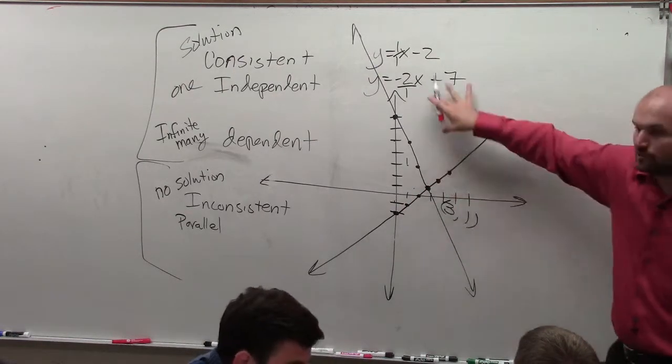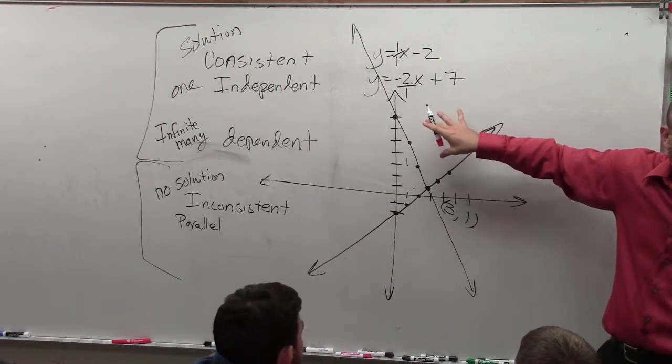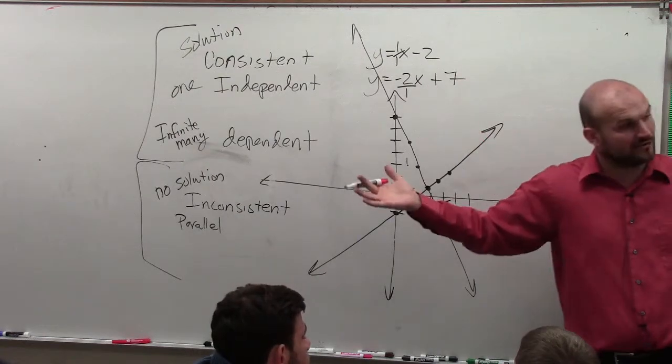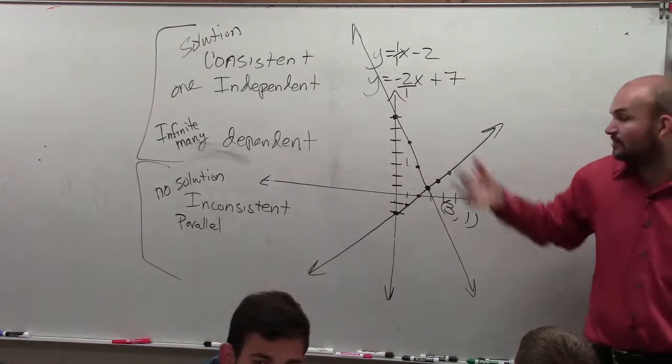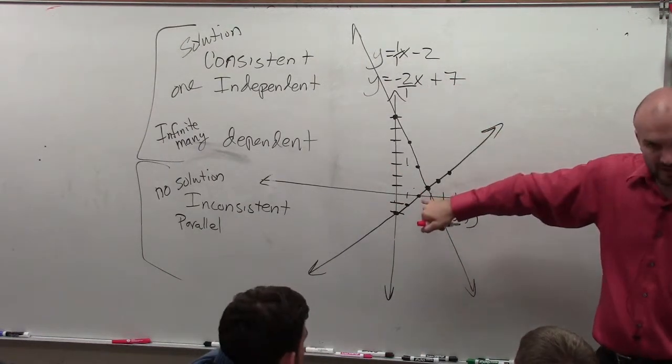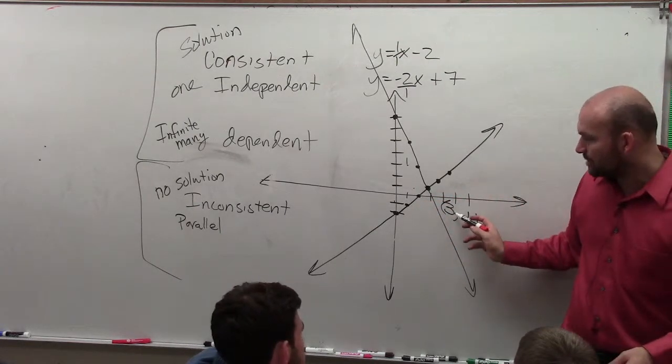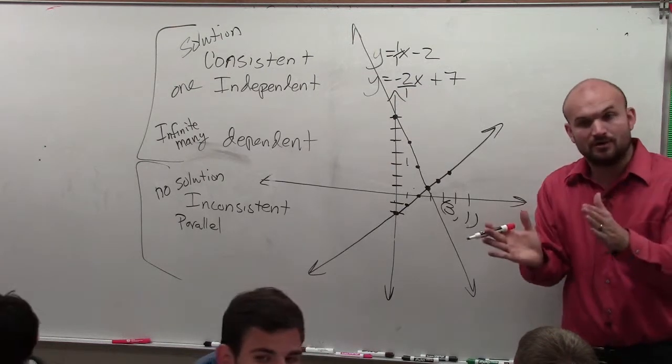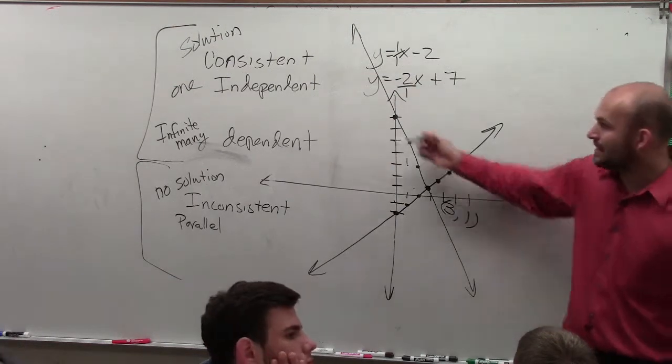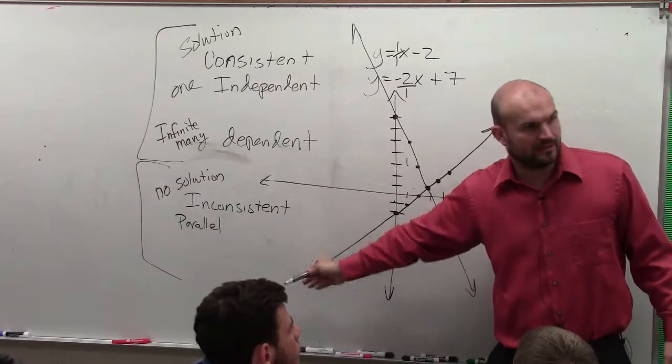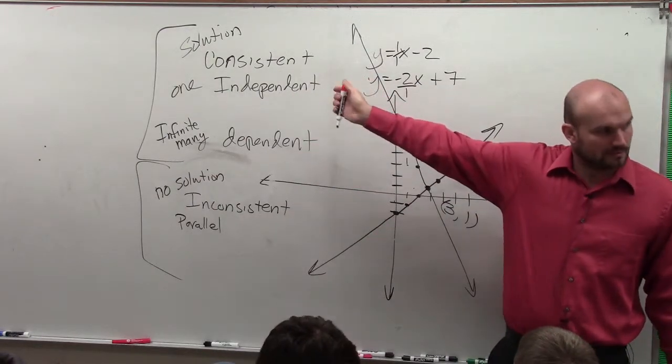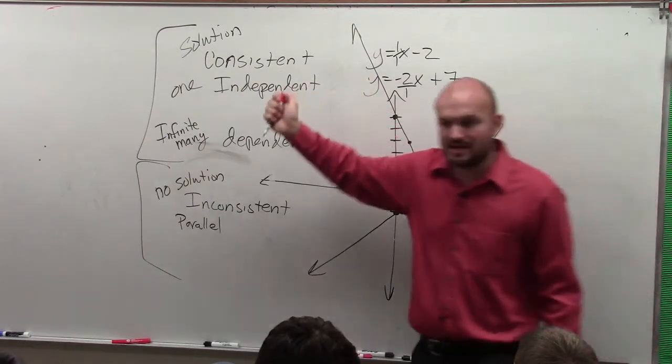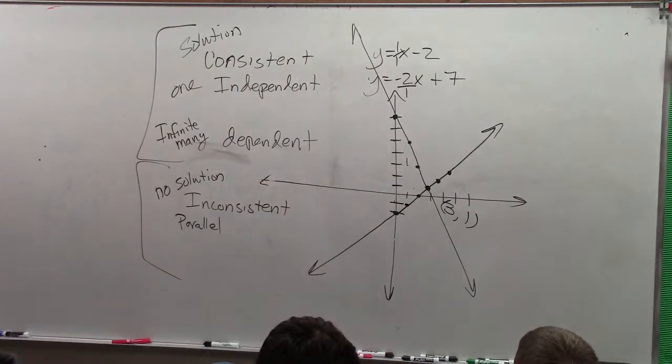So the graphing part is the easy part, right? You just graph each line. If it's in standard form, convert it to slope-intercept form. Graph them, find the point of intersection. But just remember, if it has a point of intersection, write it. If it's the same line, you write infinite many. If they're parallel, you write no solution. And then label them—label the type of system you have. And that's what you guys have for chapter 3.1. Does everybody feel confident enough now?